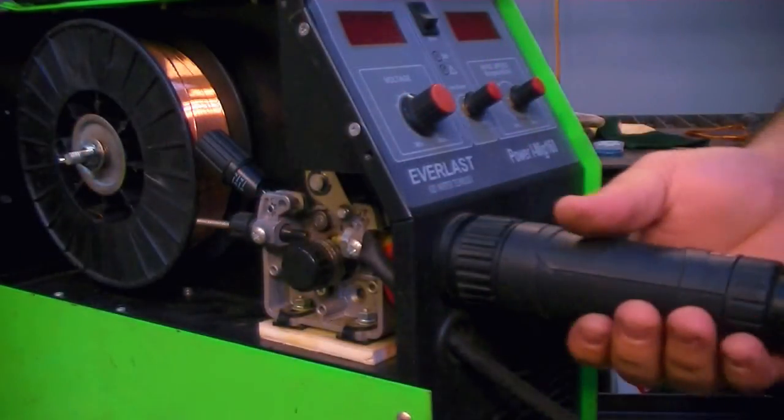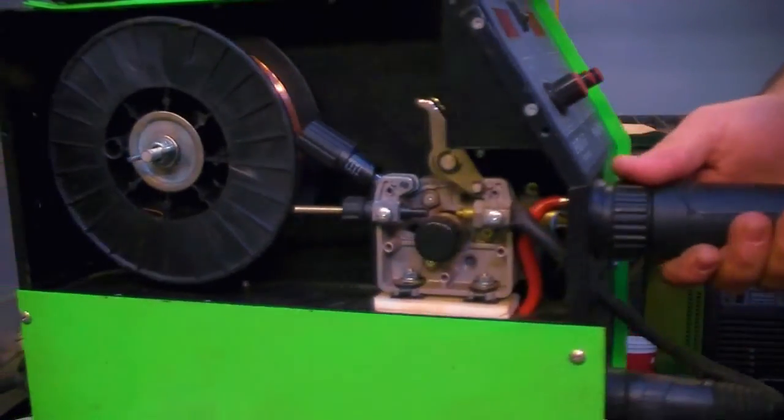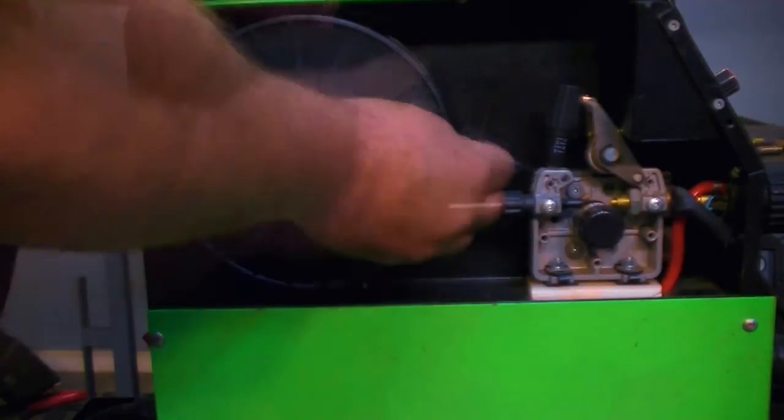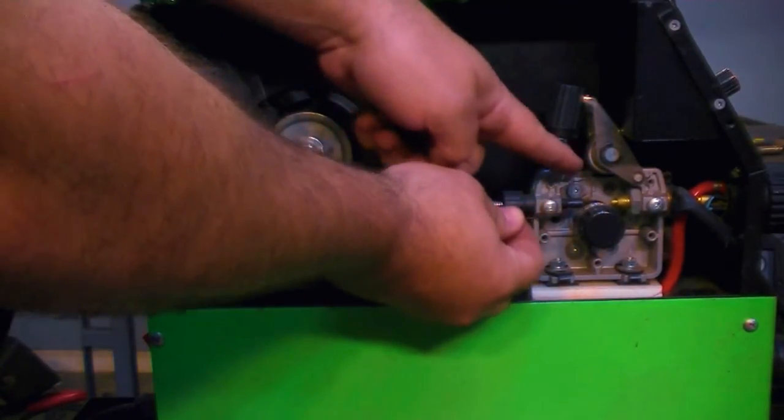Now that the gun has been installed completely, we're ready to start installing the wire. Cut the wire off here. We're ready to insert it and feed it through.